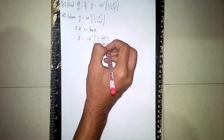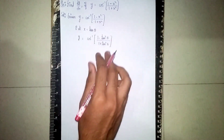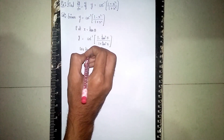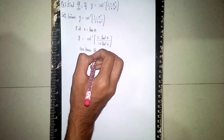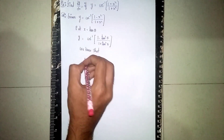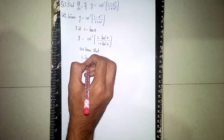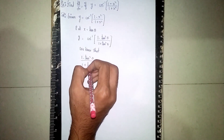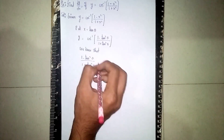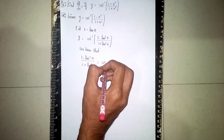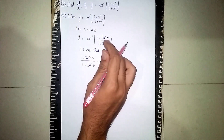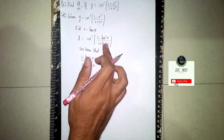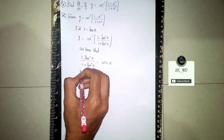Now we know that (1 minus tan square theta) by (1 plus tan square theta) is equal to cos 2 theta. This is a known formula. So instead of (1 minus tan square theta) by (1 plus tan square theta), I can write cos 2 theta. So y becomes equal to cos inverse of cos 2 theta.